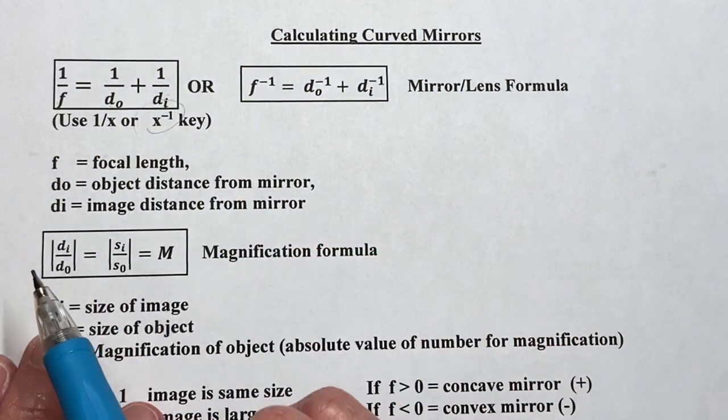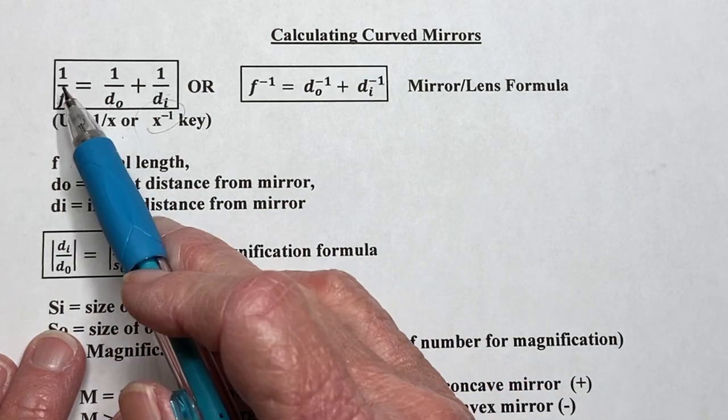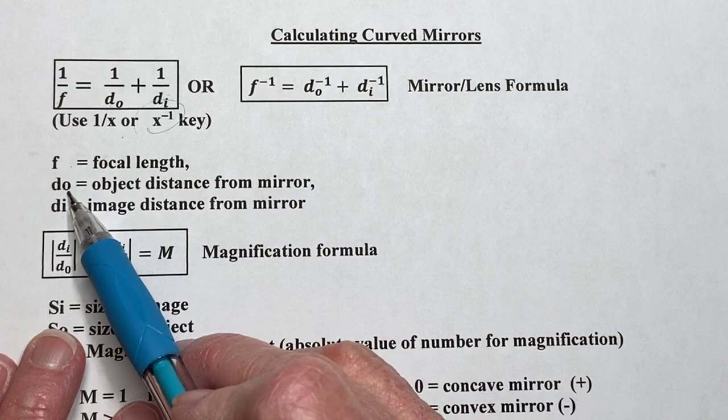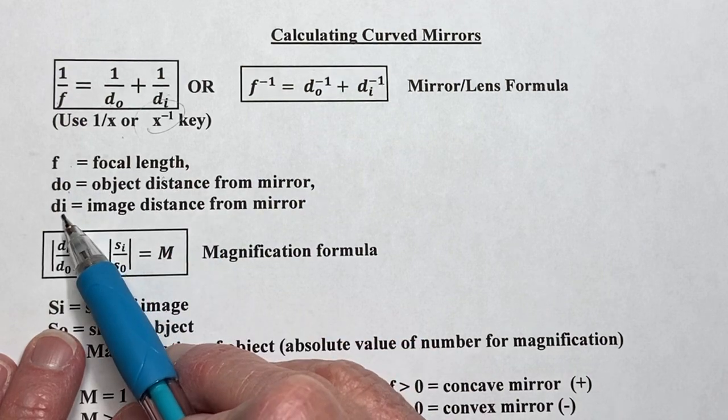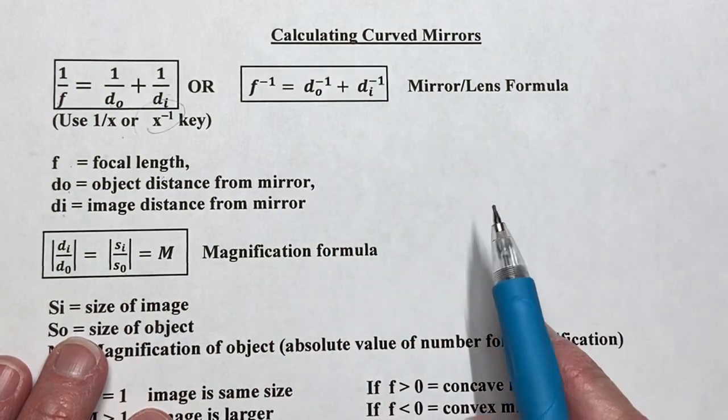So once again, most of you will use this key, or some of you will have 1 over x. f stands for the focal length, do is the object distance, di is the image distance, and they can be meters or centimeters. As long as we keep them all the same, it doesn't matter.